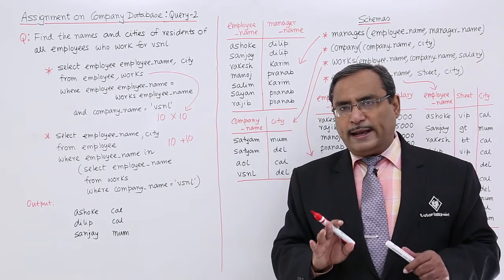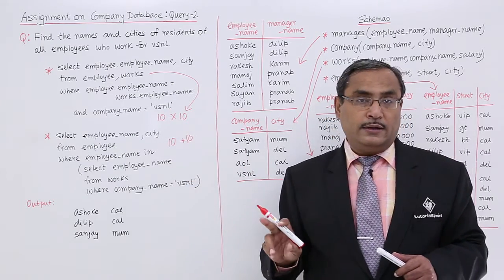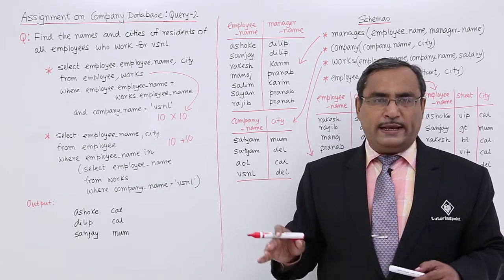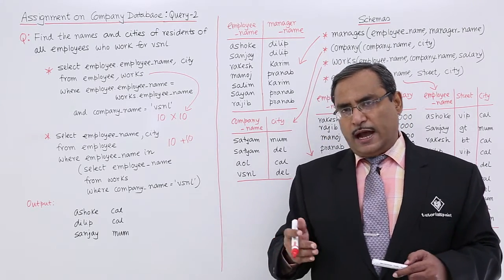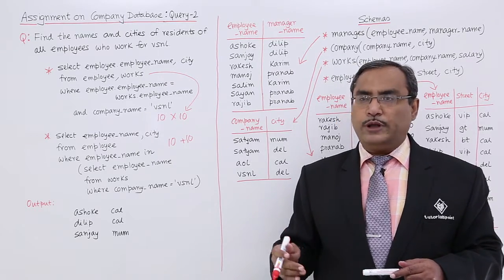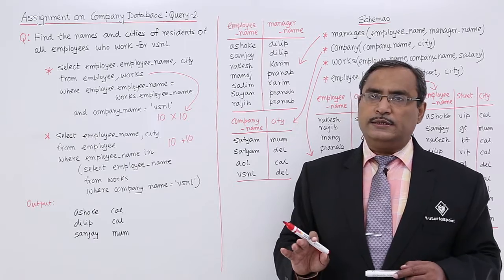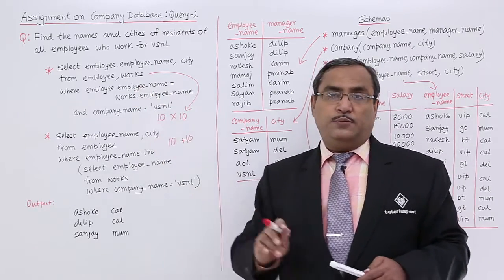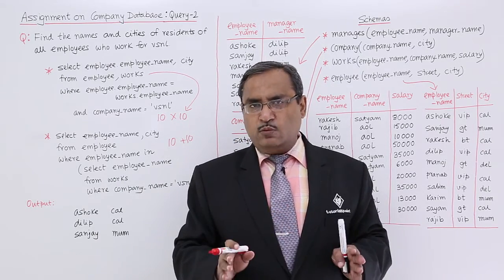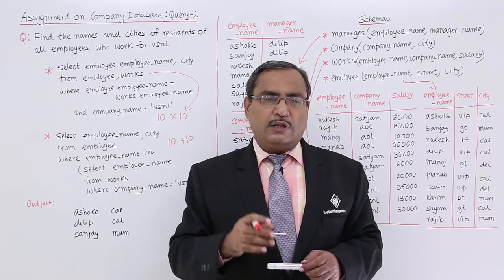Suppose we have 1,00,000 employees — consider the figure 1,00,000 × 1,00,000 versus 1,00,000 + 1,00,000. You can easily see that nested subqueries are more optimized in their execution; during run time this query produces far fewer records in memory compared to the Cartesian product approach. That is why it is better to always write nested subqueries whenever possible and avoid Cartesian product. In this way we have discussed the merits and demerits of different ways of query writing and given the solution of query number 2.